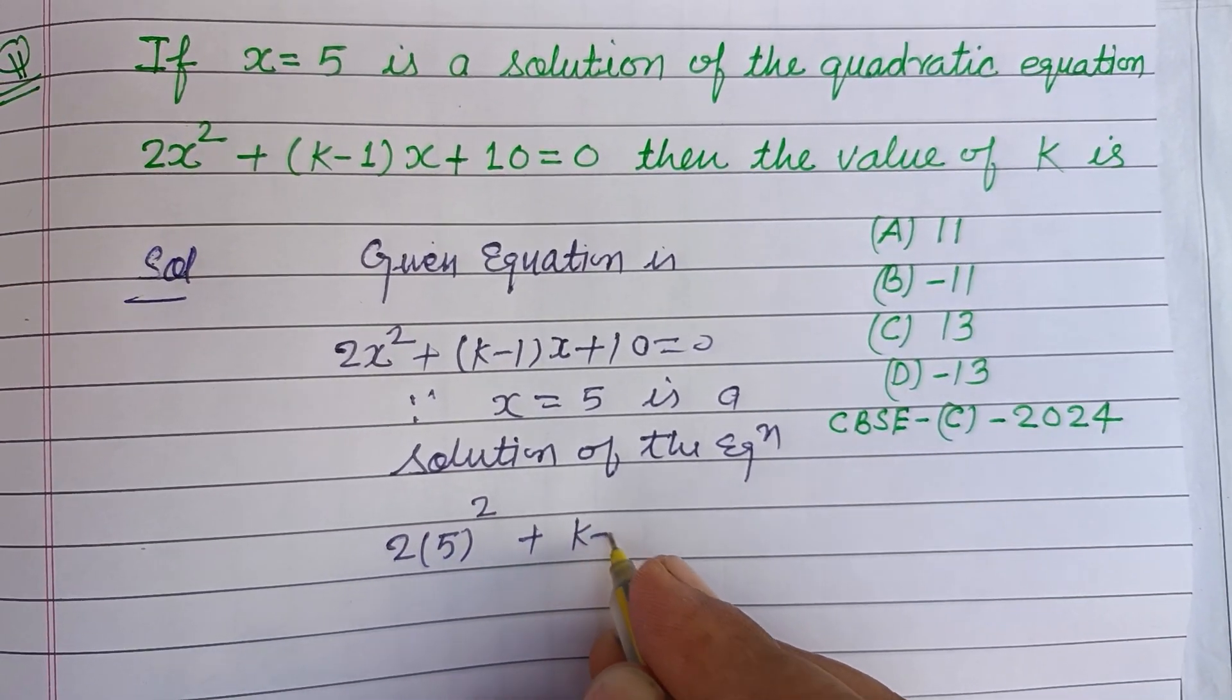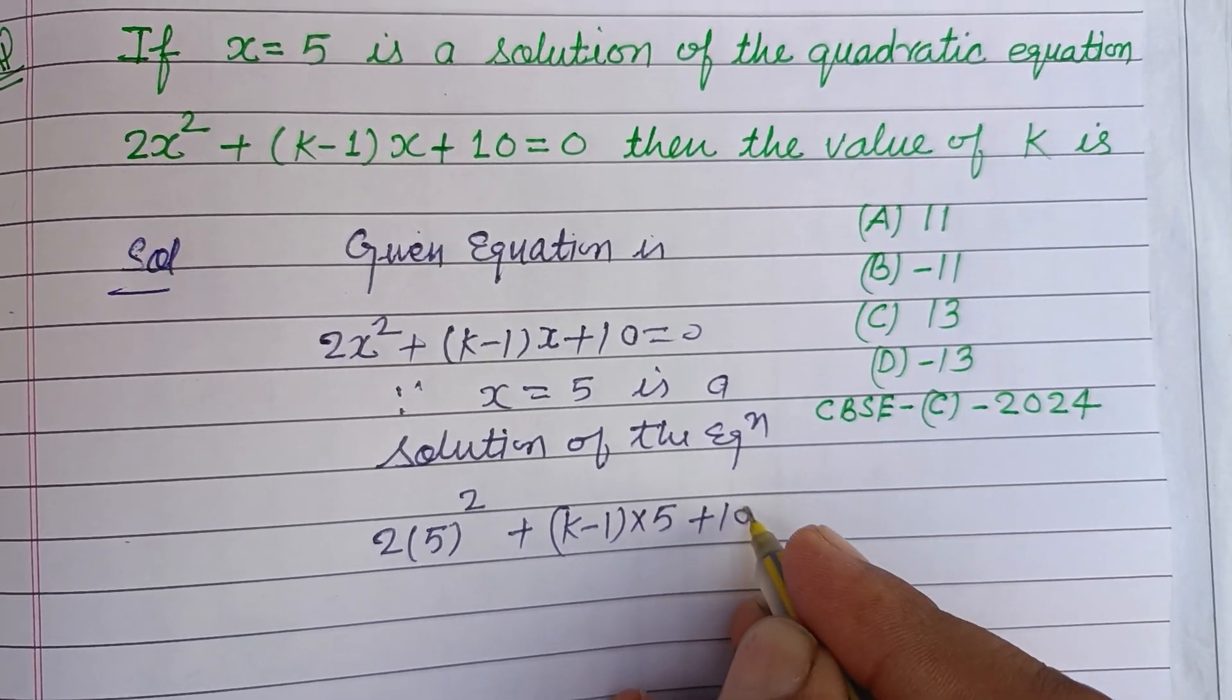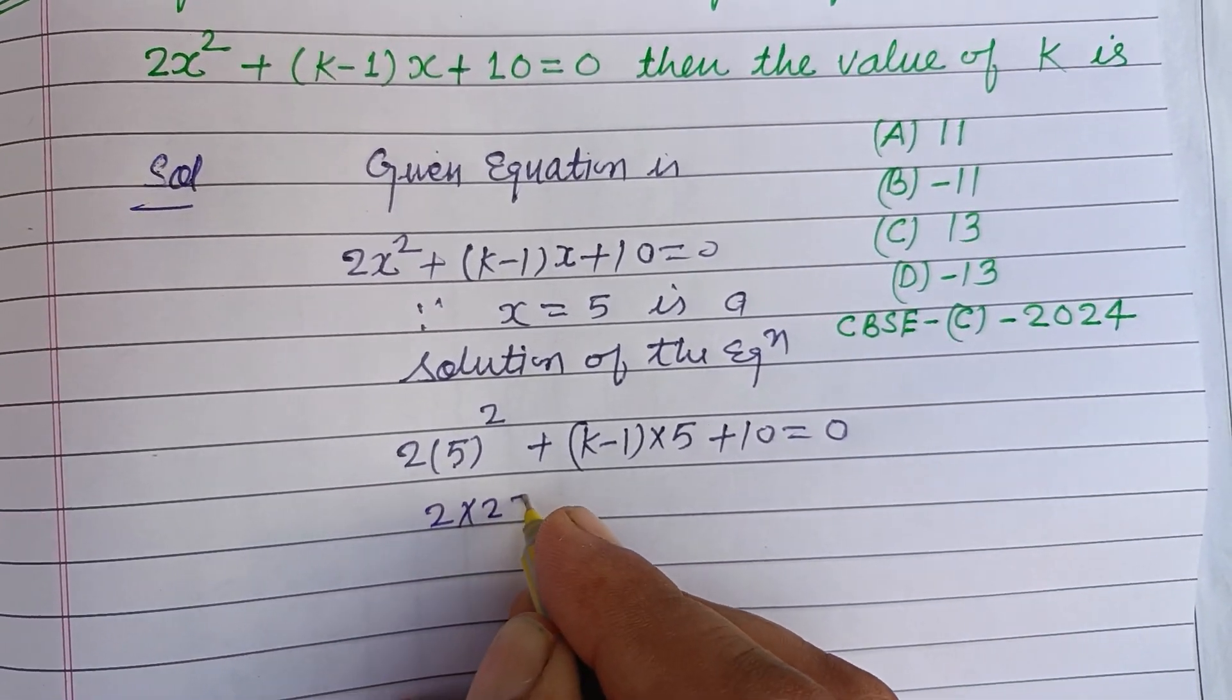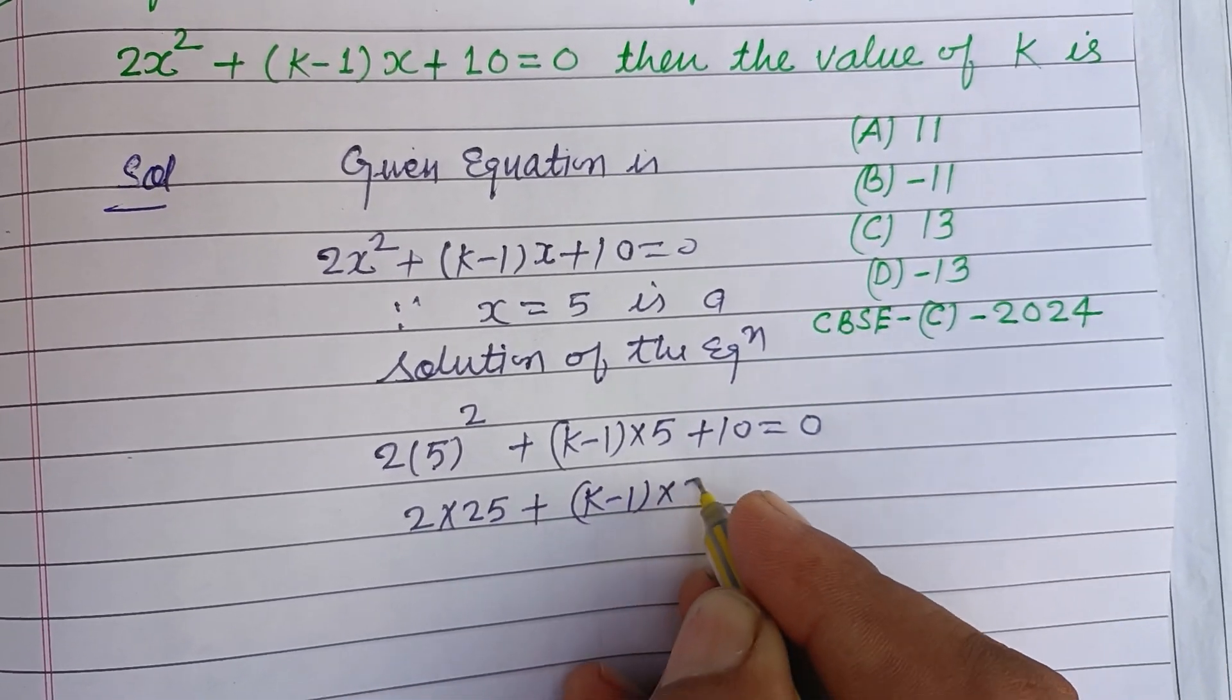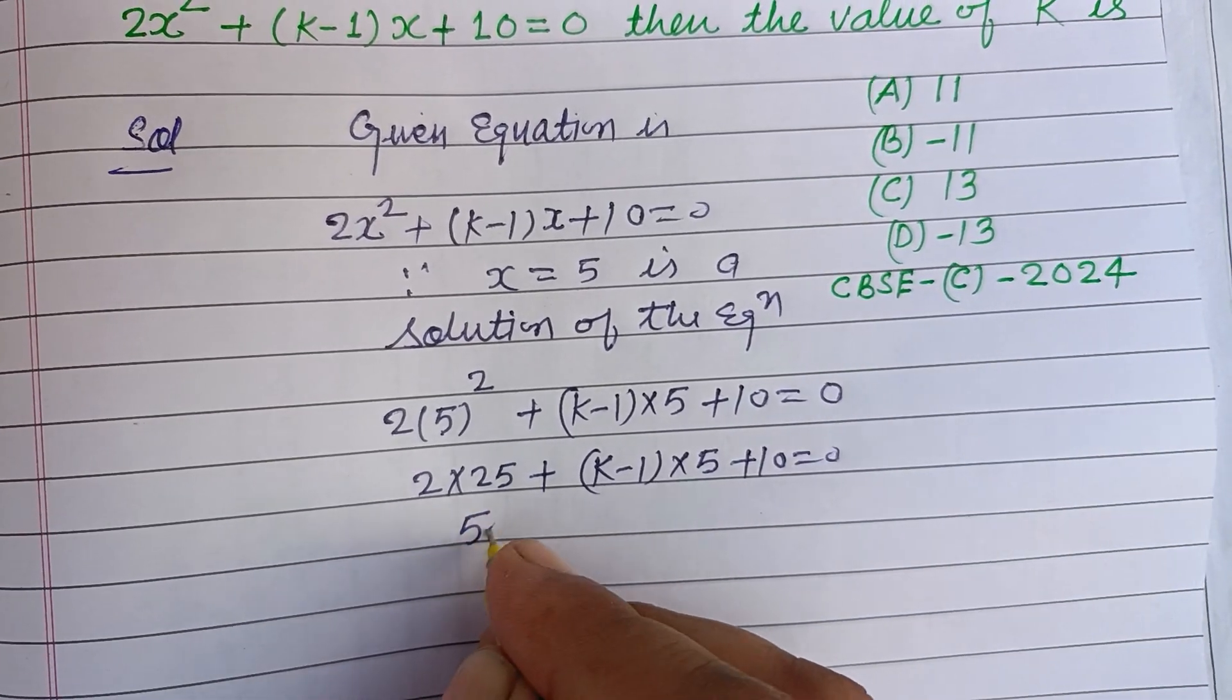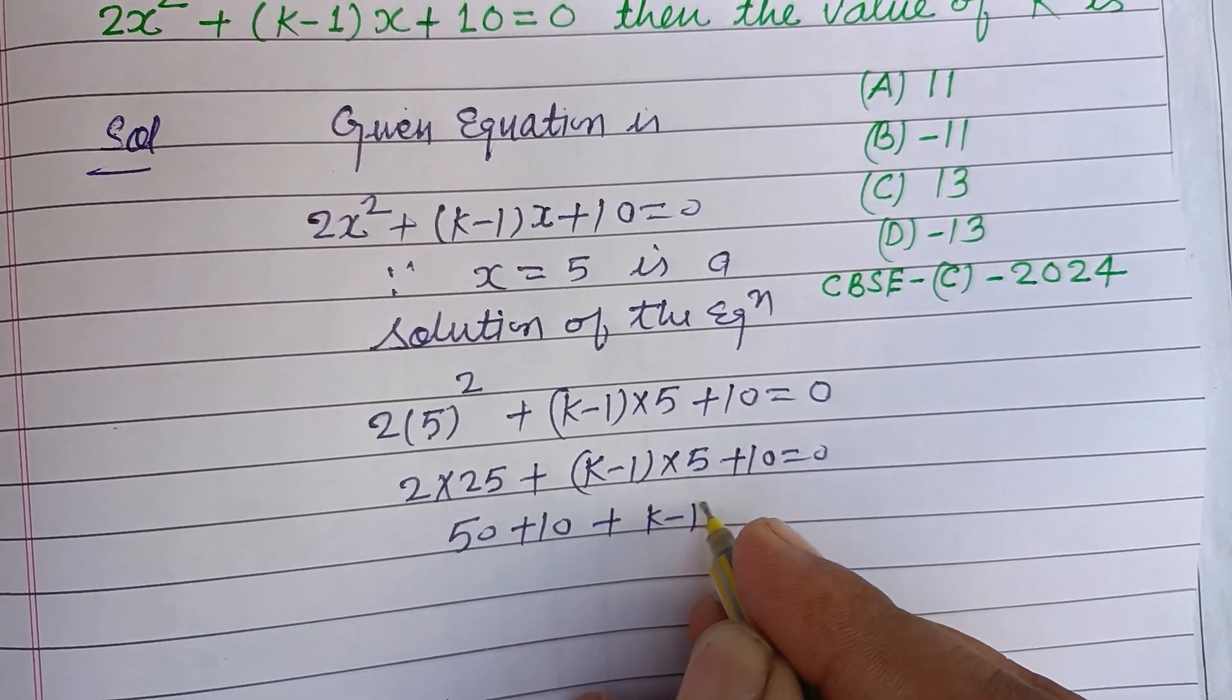So this is 2 into 25 plus (k-1) into 5 plus 10 equals 0. This is 50 plus 10 plus (k-1) into 5 equals 0. This is 60 plus (k-1) into 5 equals 0.